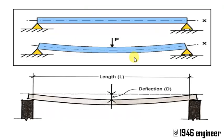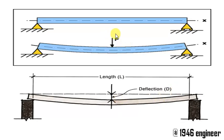Consider this simply supported beam. If you apply force F on this beam it deflects, and this length is called deflection. Deflection is defined as the physical displacement of a body due to the application of force F.